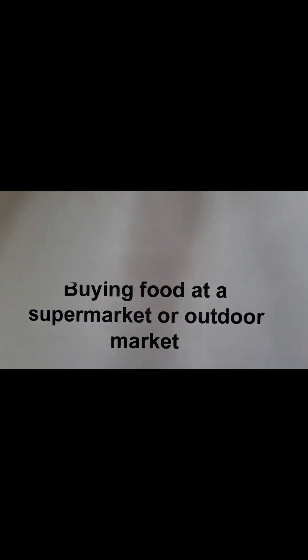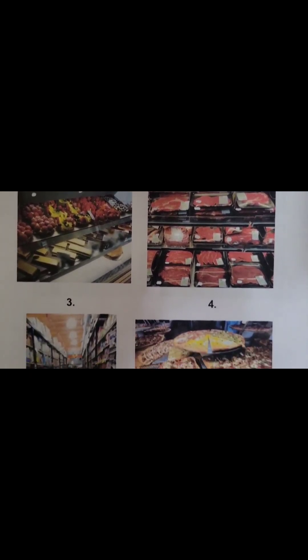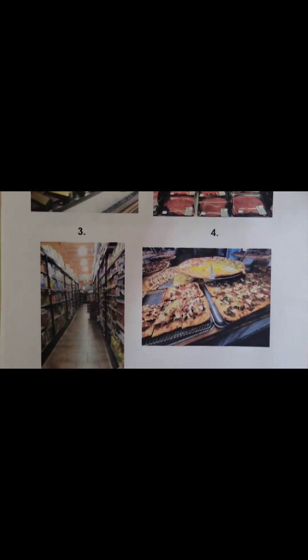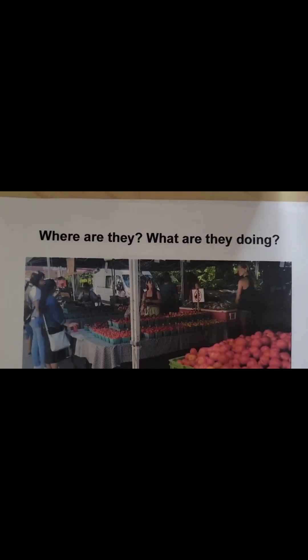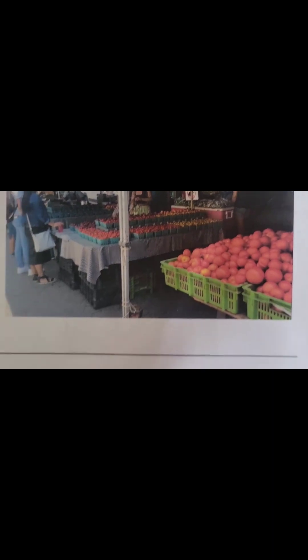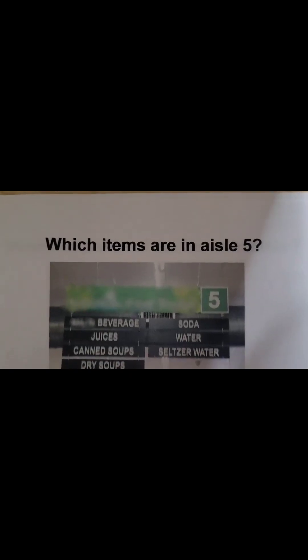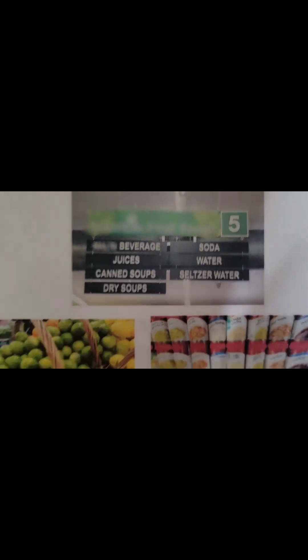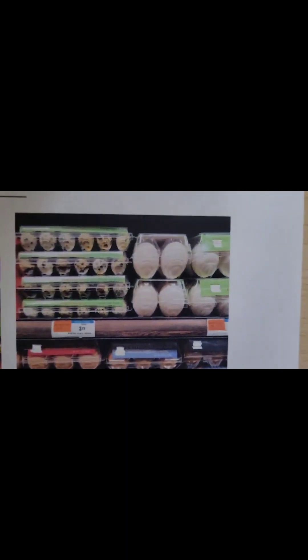Now let's buy some food from the supermarket. Matching is a great way for students to look at a picture and match it with the correct answer. This can be done in pairs as well. You're going to be using the pictures to write — for example, where is she and what is she doing? Which items are in aisle five? This is a way to identify the vocabulary words in the aisle as well as in the picture.